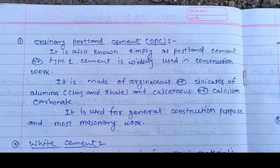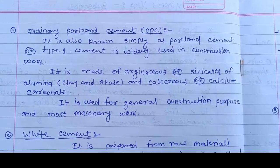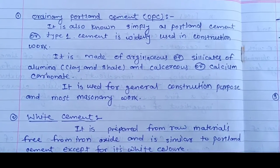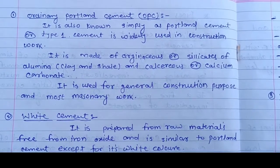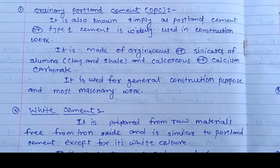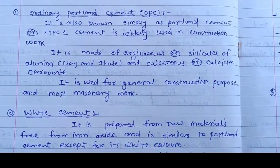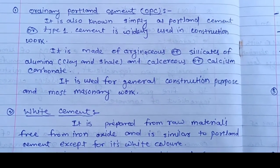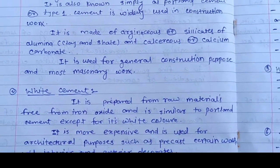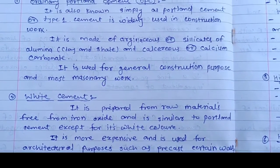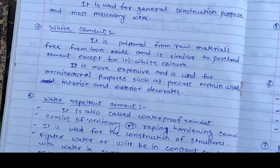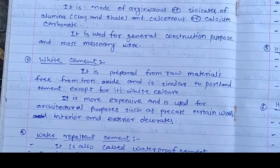The first type is Ordinary Portland Cement (OPC), also known simply as Portland cement or Type 1 cement. It is widely used in construction work. It is made up of argillaceous and silicates of alumina, clay, shell, and calcareous or calcium carbonate. It is used for general construction purposes and most masonry work.